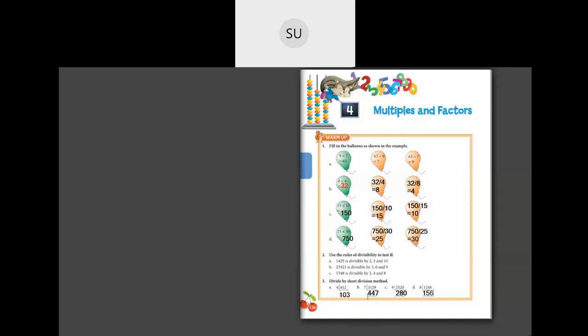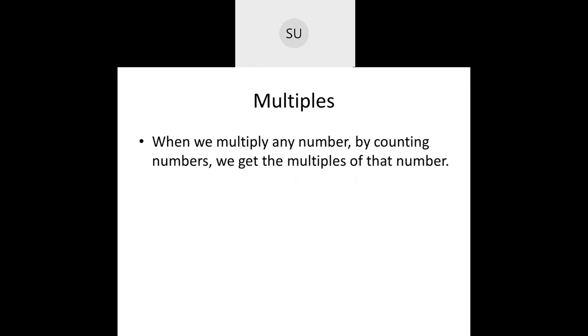So this is what we have learned in multiplication and division. Now let's see what multiples are. You know what counting numbers are — numbers 1, 2, 3, 4, 5, 6, 7 and so on are called counting numbers. Counting numbers are countless; you don't know where they end unless you define a limit. When we multiply any number by counting numbers, we get the multiples of that number.